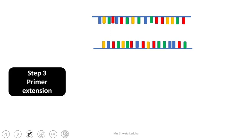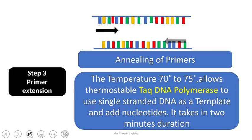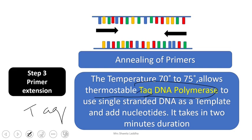The third step is primer extension. Annealing of primers is occurring - this is primer 1, this is primer 2, having opposite nucleotide sequences. Then we increase the temperature to 70 to 75 degrees centigrade. In presence of thermostable Taq DNA polymerase enzyme from Thermus aquaticus bacteria, which is stable at high temperatures and doesn't get denatured.